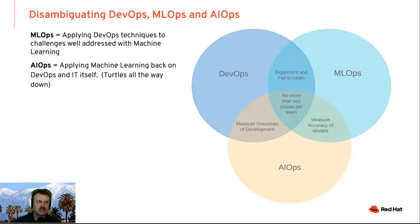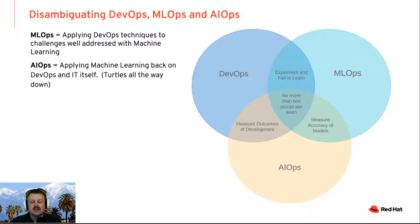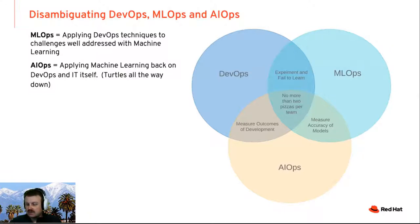Let's disambiguate some terms: DevOps, MLOps, and AIOps. MLOps I'm defining here as applying DevOps techniques to challenges that are well addressed with machine learning. I'm defining MLOps as being applied to the challenges using DevOps — rather than applying DevOps to machine learning — because remember, it's the outcomes that we're concerned about. So if we find that machine learning is not actually the best way to address a problem, we would surface that and give it as appropriate feedback, and perhaps qualify out that particular challenge. AIOps is defined as applying machine learning back on DevOps and IT itself.